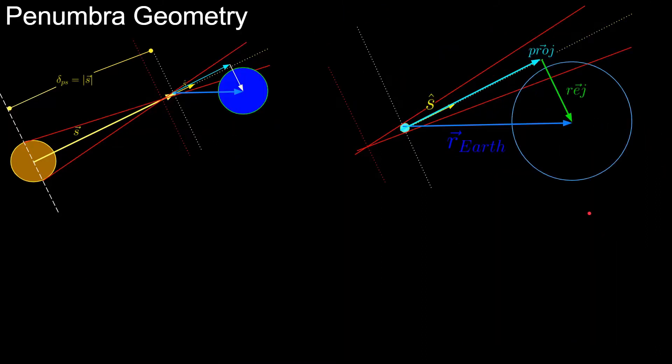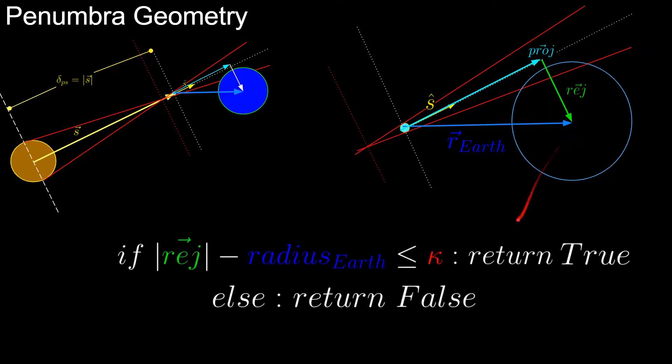However, now we'll be assuming that the eclipse body is spherical, so we also need to account for the body's radius. So as we can see in the diagram here, the magnitude of the rejection vector is greater than the cone's radius, but part of the body is still in eclipse. So to account for this, we need to subtract the body's radius from the rejection vector, giving us this modified version of the equation from the last video.